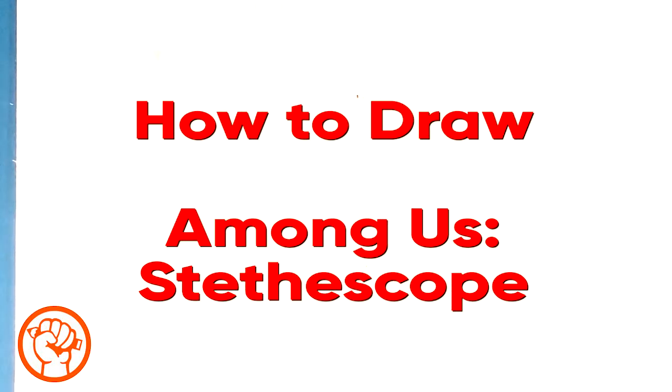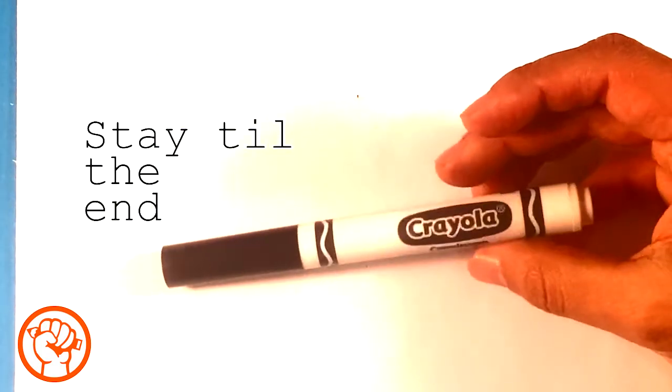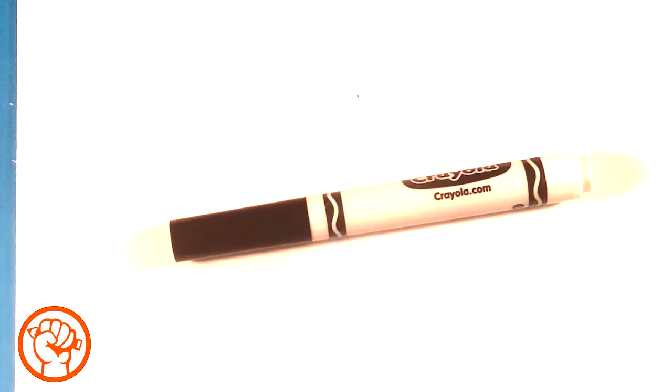Hey, how's it going? Today I'm going to go over how to draw an Among Us character with a stethoscope - that's basically the thing doctors wear on their head in cartoons and stuff like that. Let's get started. I'm going to be using this Crayola brand marker and regular printing paper.